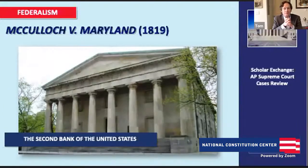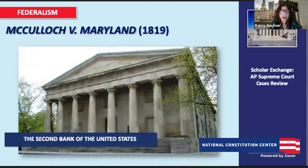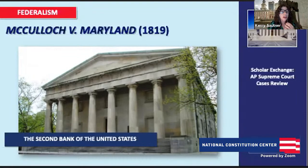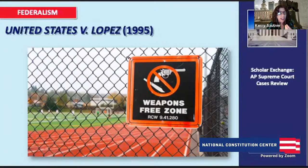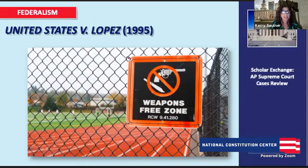The next case in this federalism section is a much more modern case — Lopez — and it looks at guns on school property. Getting back to the big idea around supremacy and the power of Congress and how the courts define this policy, what do we take from this Lopez case?